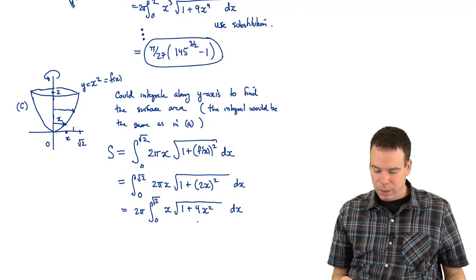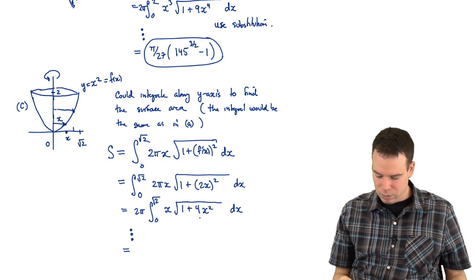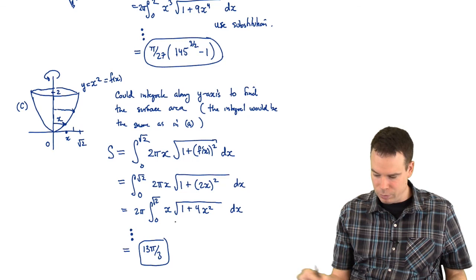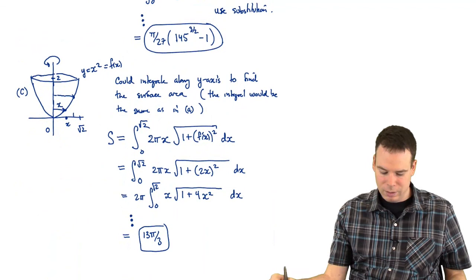We've set up the integral and it's now an exercise in integration. Notice that the derivative of what's under the square root is proportional to the x sitting out front, so substitution works here. The result is 13π/3 — no surprise, because that was exactly the answer from part A. These are the exact same object: the same surface, one just sitting along the x-axis and the other along the y-axis.